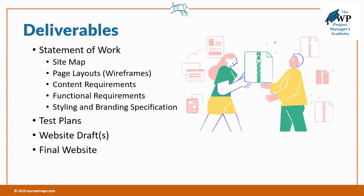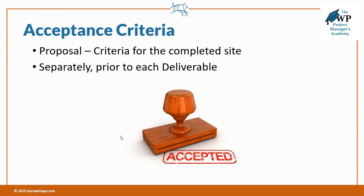Now let's talk about acceptance criteria. You need to agree on acceptance criteria for deliverables upfront. The way you handle it is that you put the acceptance criteria for the completed site in the proposal. For all those other deliverables, if you tried to put the criteria for acceptance in the proposal it's just too much — so we do that separately prior to creating each deliverable. We tell the client, 'Okay, we're getting ready to do wireframes, and here are the criteria for acceptance' — for example, that the layout satisfies the client in terms of where the content should go.